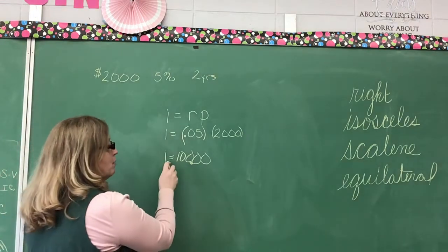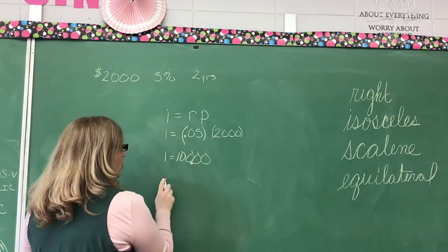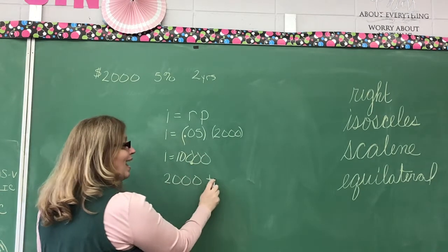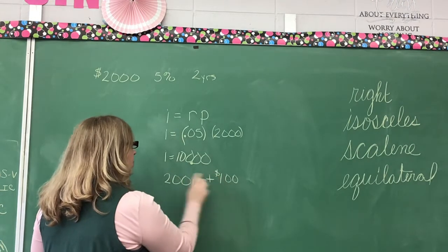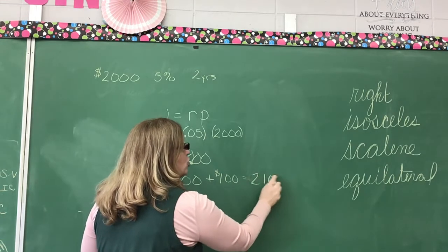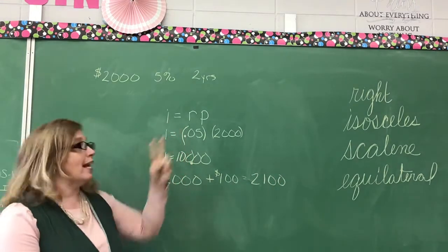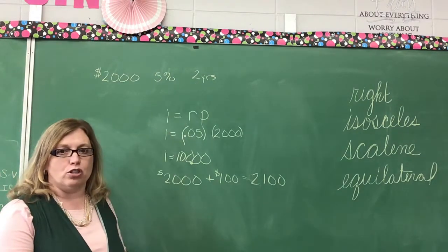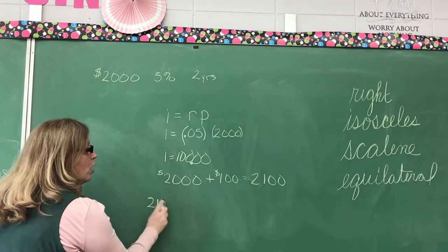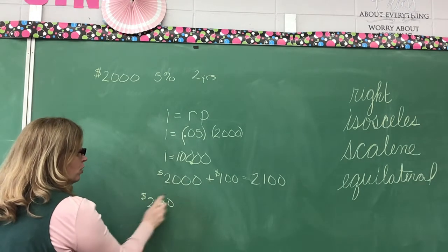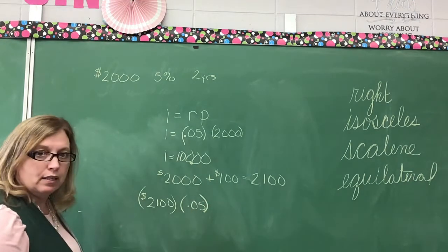How much money is in the account at the end of the first year? We're going to take our principal. For our first year, we're going to take the principal, which is the $2,000. We're going to add the interest we earn, which is $100. We're going to add them together. He has $2,100. What happens? Because we're staying there for two years, compounded interest. We go back and we say, now we have $2,100. We're going to multiply that by 0.05. It's still the same rate.